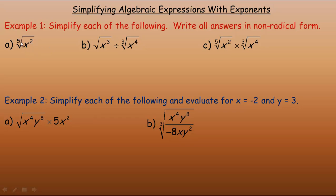So the first one, we've got the fifth root of x squared. Now, the root here, the 5, is the denominator. And the 2 is the power. So we would write that as x to the power of 2 fifths.